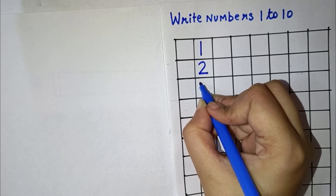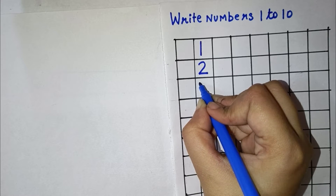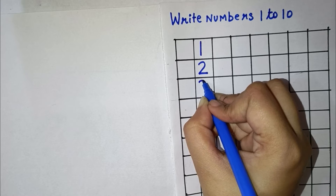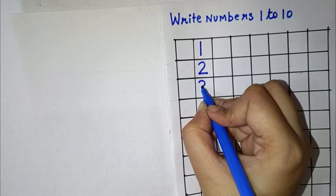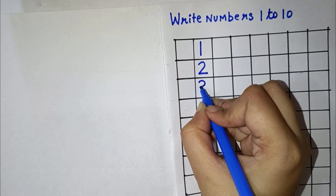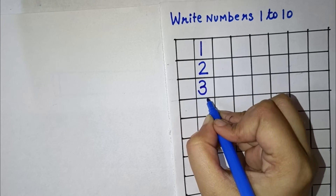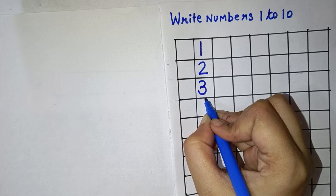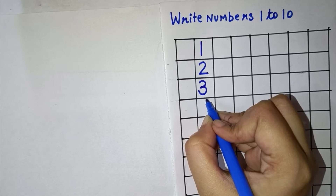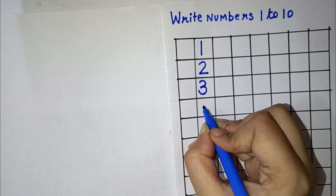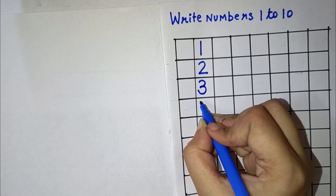Now the next number is 3. So for 3, we have to draw a small curve, again a small curve, and this makes number 3.